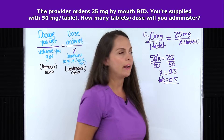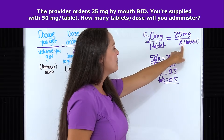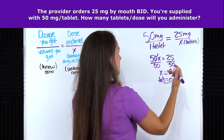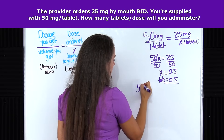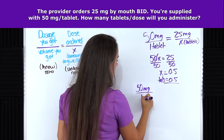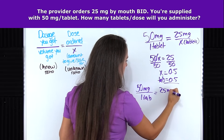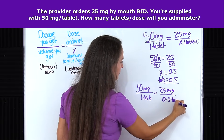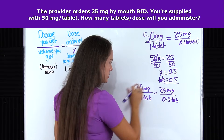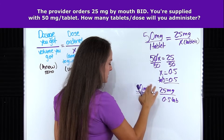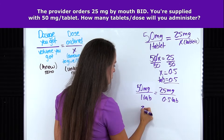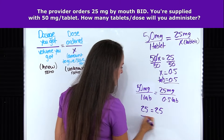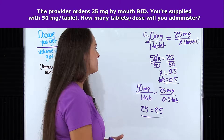But let's make sure that's really our answer. Let's plug 0.5 into the equation and verify that these two ratios are actually equal. Plugging in 0.5 and cross multiplying: 50 times 0.5 gives us 25, and 1 times 25 gives us 25. Are these numbers equal? They are. So this is correct.